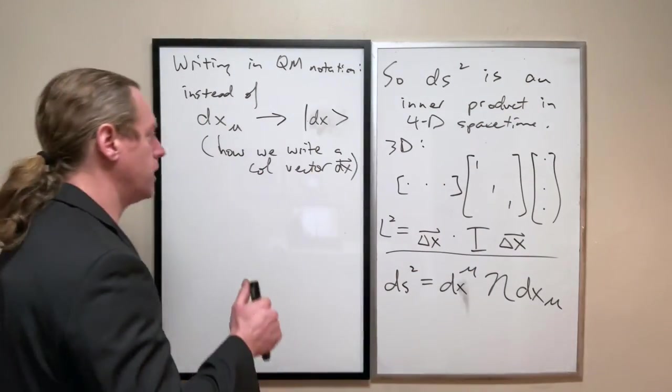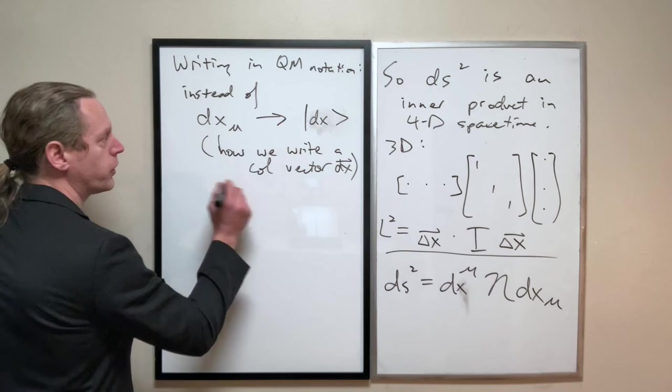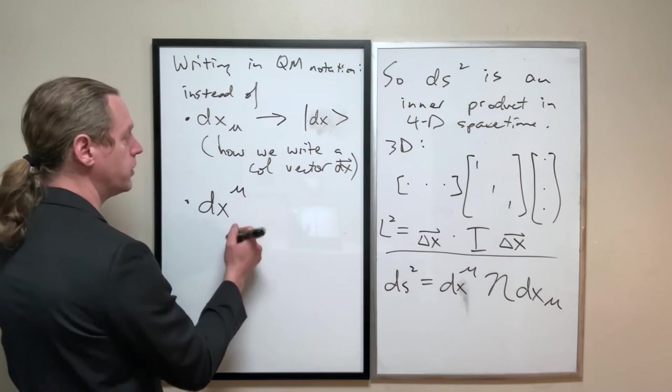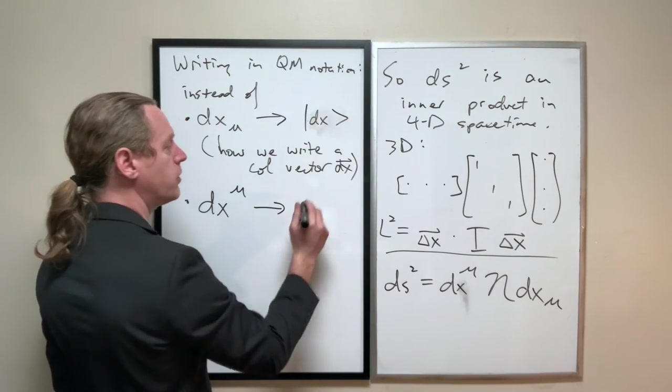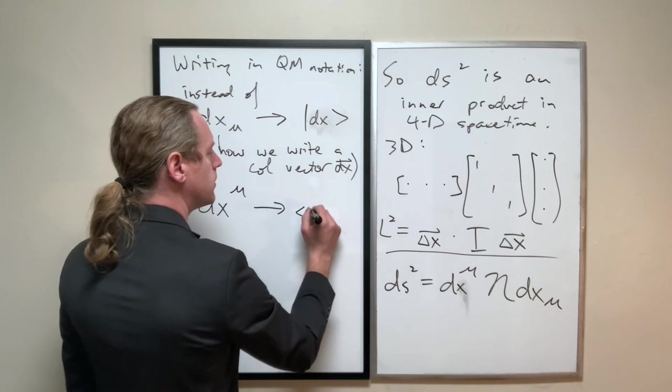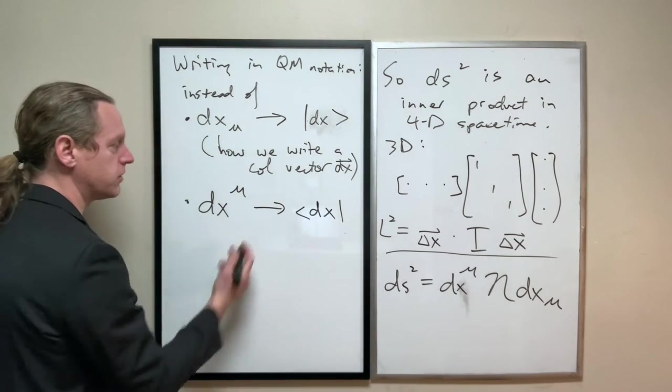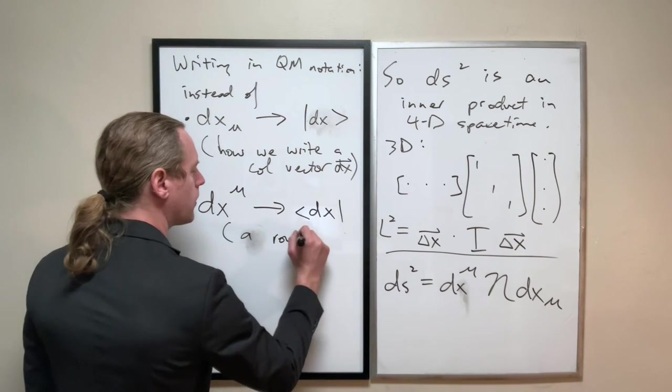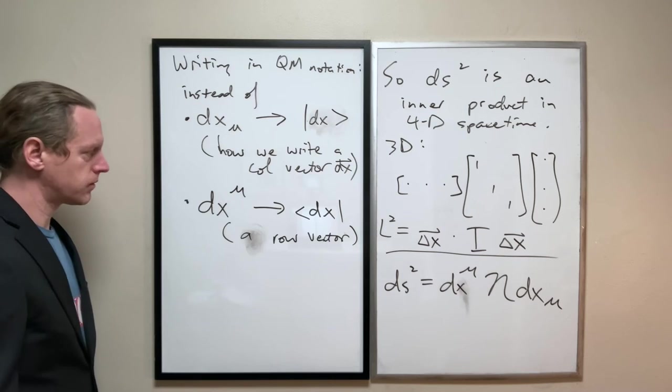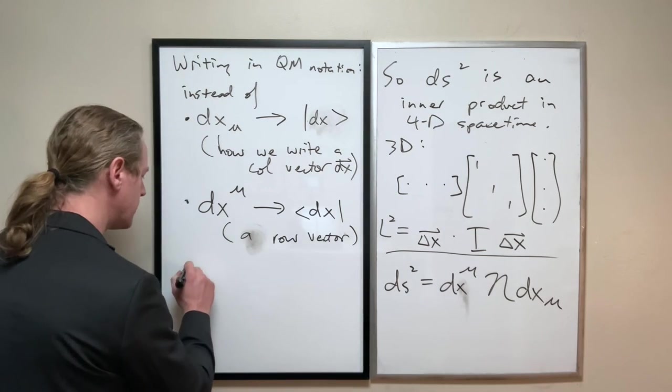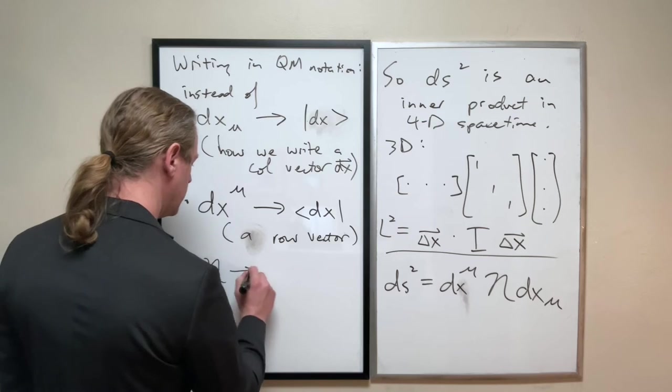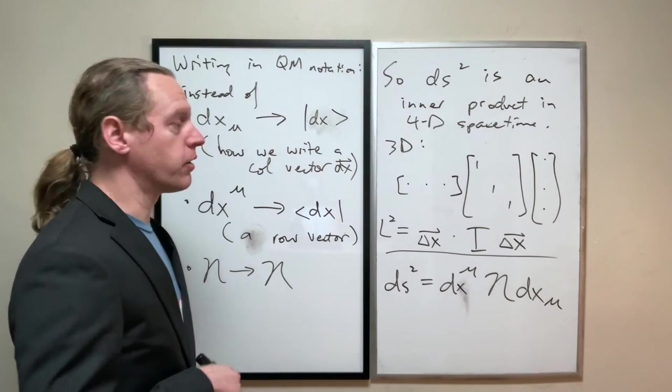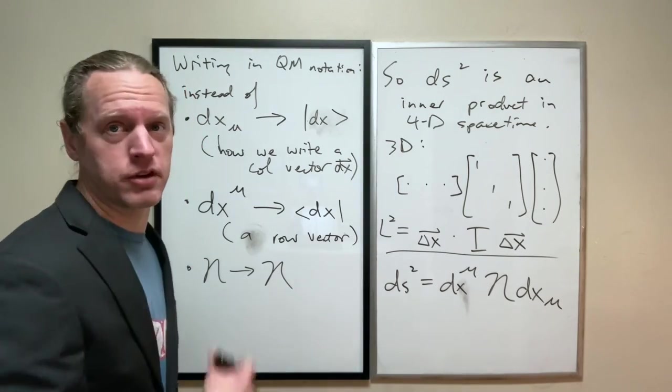And the way that we notate a row vector, dx mu, is we just flip it around. We have dx like that. So again, this is just simply how we write a row vector. And then, really, eta is eta. We don't have to write anything differently. So what we get out here for quantum mechanics, the quantum mechanics version of this would be, they would write it as ds squared.